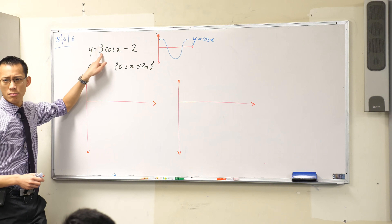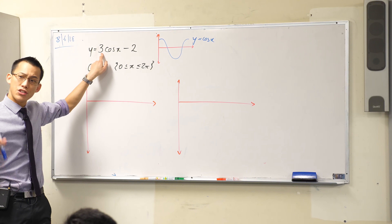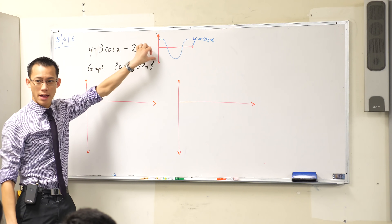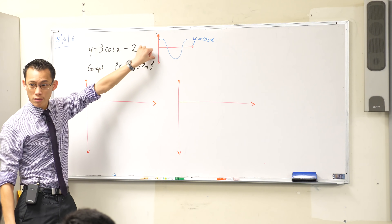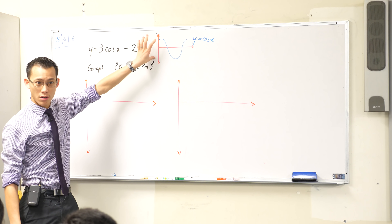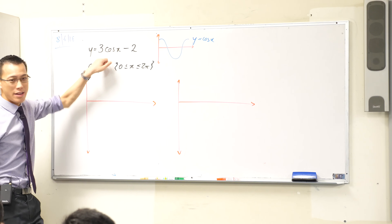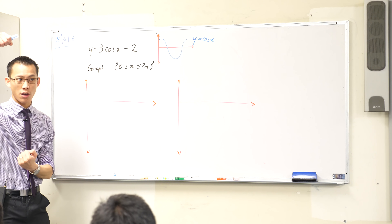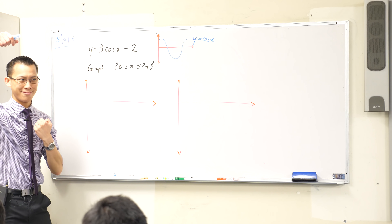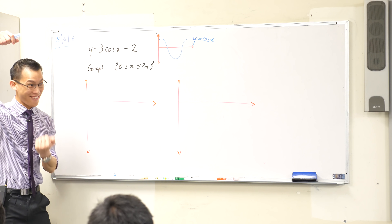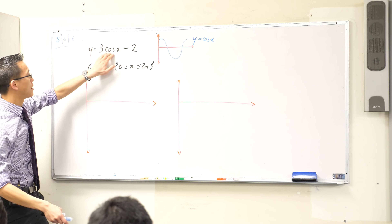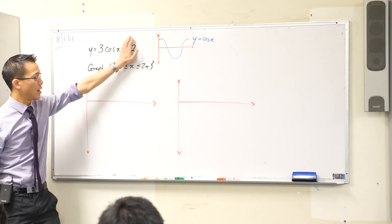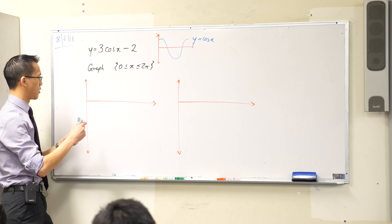So if you've got the picture of regular cosine here, there are two modifications visible in the given graph. What does the 3 do? This changes the amplitude. Normal cosine goes from negative 1 all the way up to 1, so if we stretch it vertically, this is going to go from negative 3 up to 3. That's what happens with y equals 3 cos x.